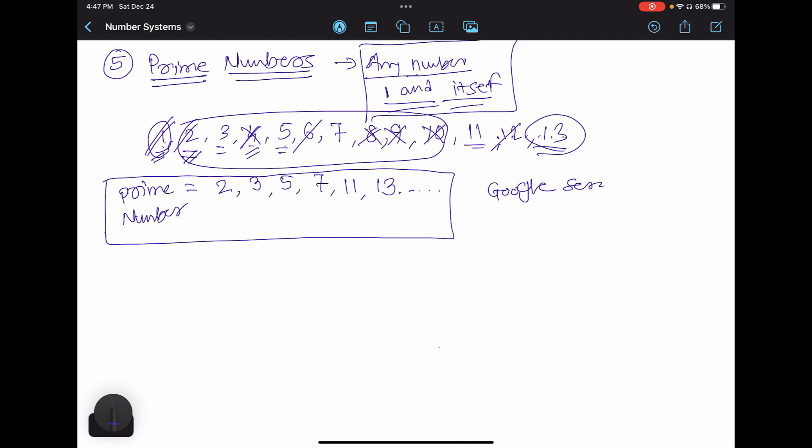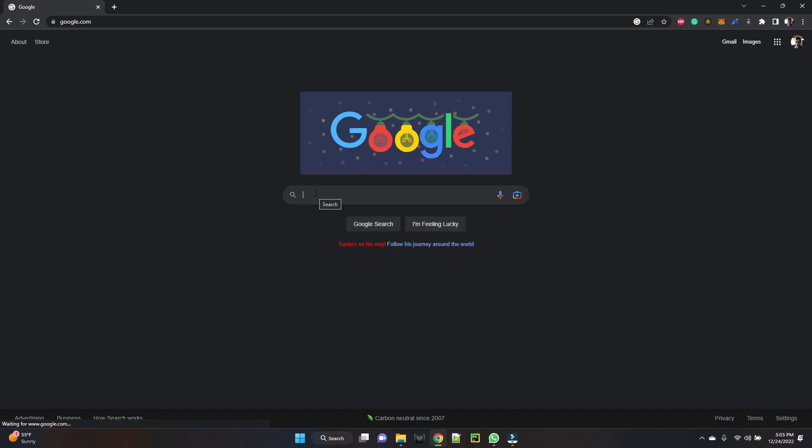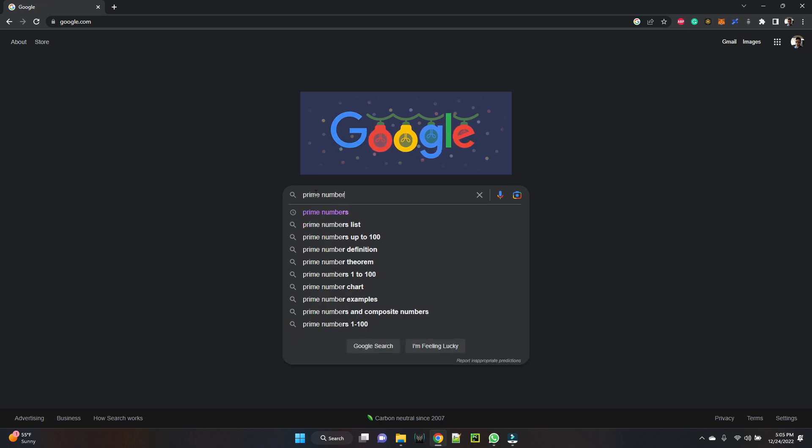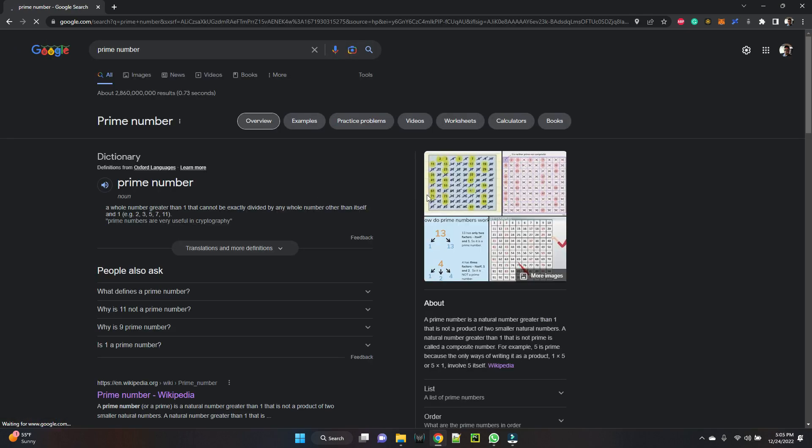Here we can even do some Google search to check all the prime numbers. It's always good to know prime numbers from 1 to 100. That will become easier while we solve the questions. Now let's go to Google and try to find what are the prime numbers.